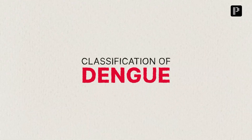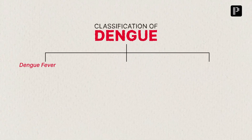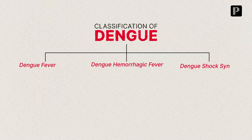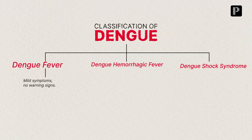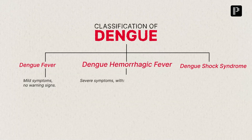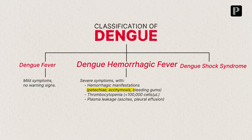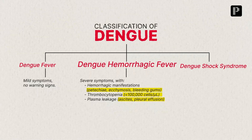Dengue can be classified into 3 categories: Dengue Fever, Dengue Hemorrhagic Fever, and Dengue Shock Syndrome. Dengue Fever usually presents with mild symptoms and no warning signs. Dengue Hemorrhagic Fever is more severe, with features like hemorrhagic manifestations, thrombocytopenia, and plasma leakage.